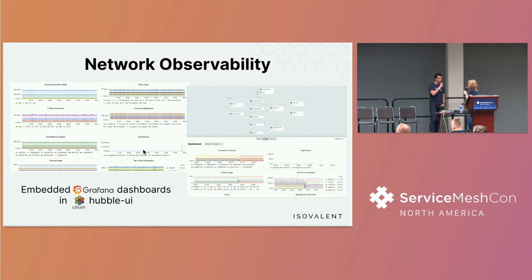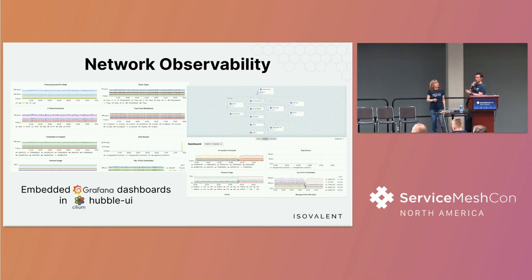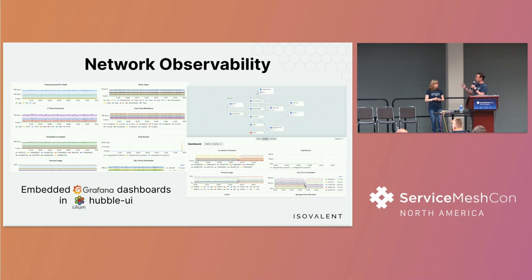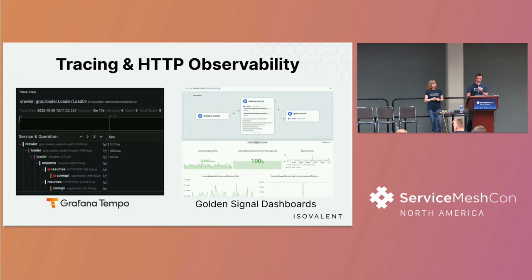This also works for pure network observability on the lower levels — layer 3 and layer 4 — all integrated into one set of dashboards. Hubble UI can now directly embed Grafana dashboards. We can also do tracing: there is an example of spans displayed in Grafana Tempo generated by Hubble, as well as the Grafana Signal dashboard we just saw.